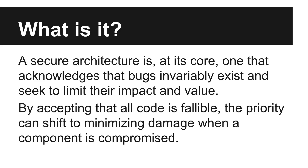To get started, let's talk about what a secure architecture actually is. My definition of a secure architecture is one that assumes bugs exist and seeks to limit exposure when a compromise happens. This really requires you to accept that all code, no matter how much testing it has undergone, is fallible. From that acceptance, we can help keep attackers from getting to the really good stuff.